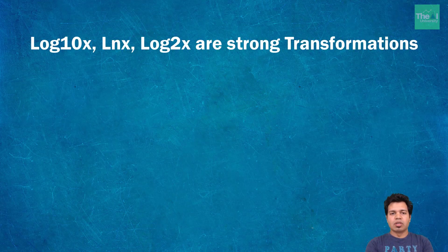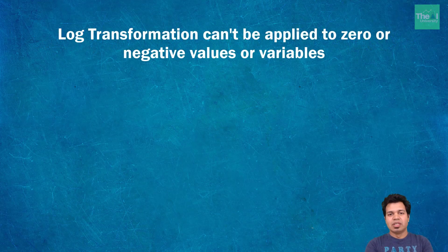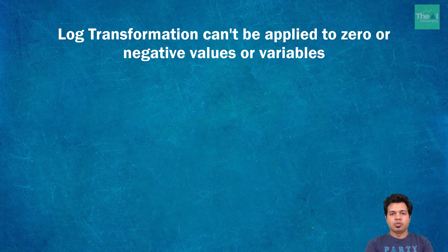Log10, natural log, or log base 2 transformation is a strong transformation with a major effect on distribution shape. It is commonly used for reducing right skewness. However, log transformation cannot be applied to zero or negative values — applying it to zeros will produce negative values. We also have other transformations at our disposal, such as inverse transformation and square root transformation. Note that positively or negatively skewed data interferes with running parametric statistics.